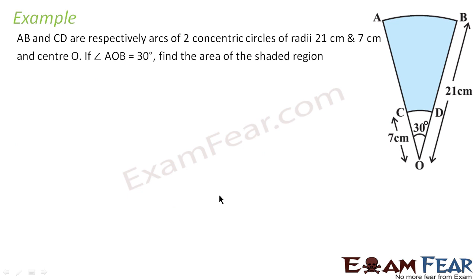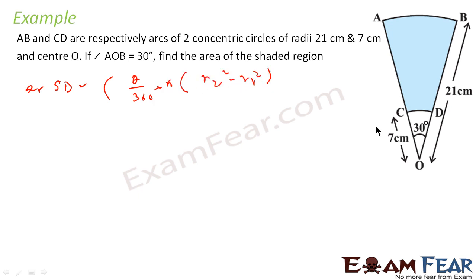Let's take one more example. AB and CD are respectively two arcs in a circle of radius 7 and 21 centimeters respectively. If angle AOB is 30 degrees, we have to find the area of the shaded region. Area of shaded region is nothing but area of the bigger sector AOB minus area of the smaller sector COD. So area equals theta by 360 into π × R2 squared minus theta by 360 into π × R1 squared. Putting values: 30/360 × (22/7) × (21² − 7²).